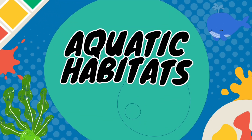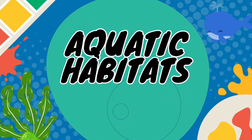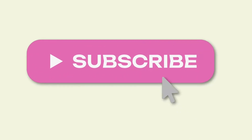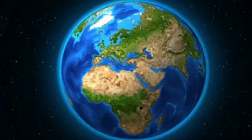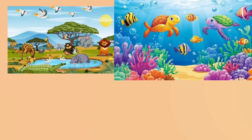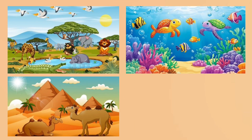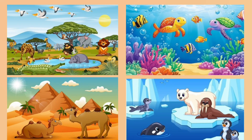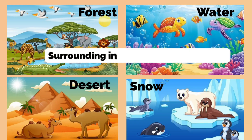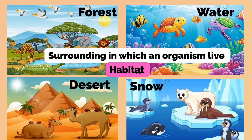Earth is a home for all living organisms. Different organisms live in different places. The surroundings in which an organism lives is called its habitat.